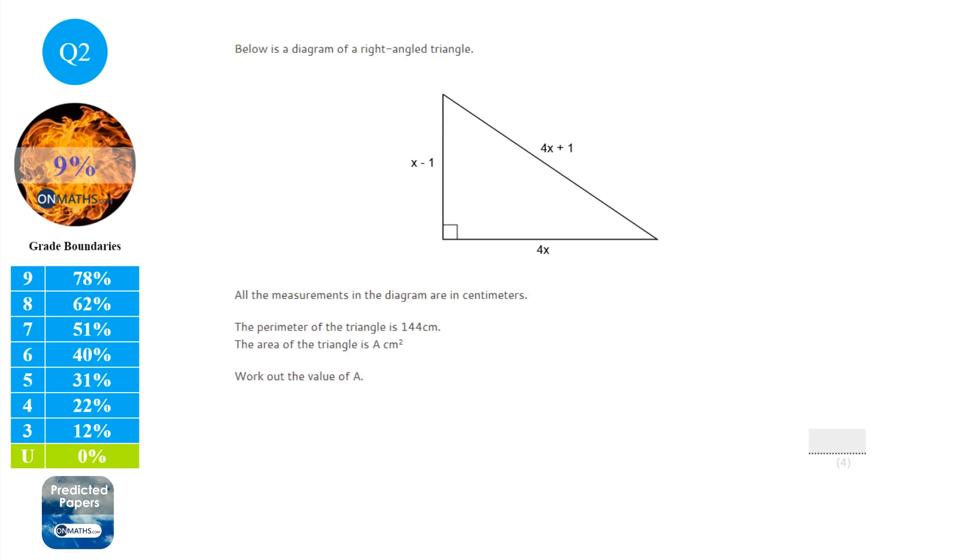So this is a question mixing algebra and areas and perimeters. Quite a standard difficult question on the exam. But the method of working out is always the same. What you need to do is find out what the perimeter for this triangle is in algebra, find out what it is as a number, and just get those equal to each other. This will make sense as we go on.